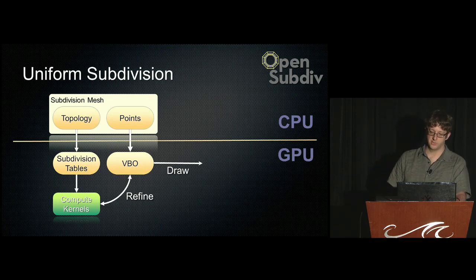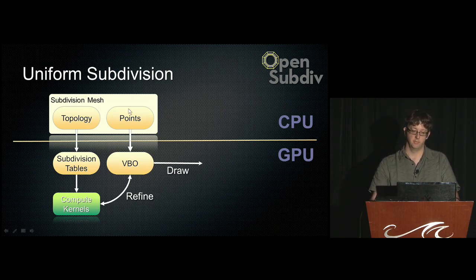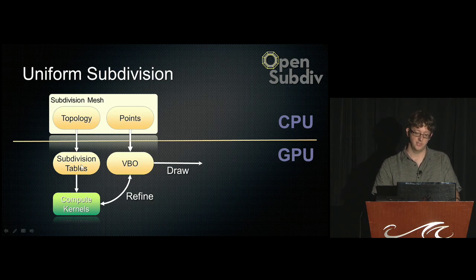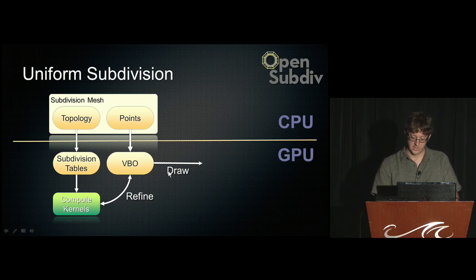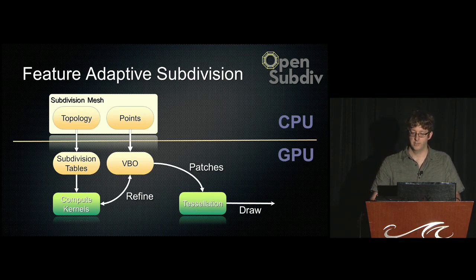With uniform subdivision — what we showed at SIGGRAPH this summer — on the CPU side you only have topology and points: the coarse mesh, not all that high-resolution geometry. We send subdivision tables down to the GPU, which does Catmull-Clark subdivision and generates VBOs to draw them. The new addition is that instead of generating the VBO directly, we generate a series of patches and hand those down to tessellation hardware in OpenGL or DirectX to generate the resulting surface on the fly.